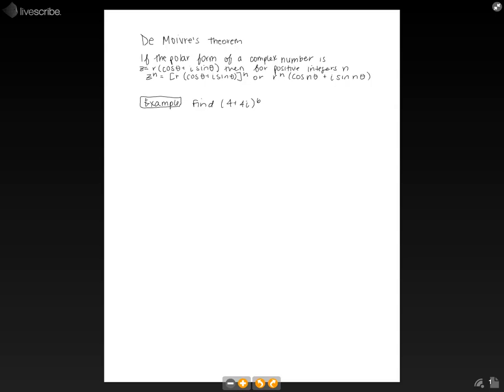So let's do an example to work through this theorem. We're asked to find (4 + 4i) to the sixth power. First we have this in rectangular form, so we first need to express it in polar form.